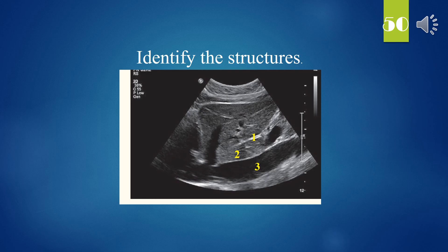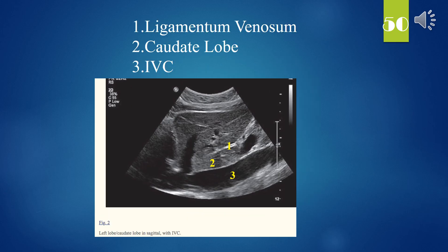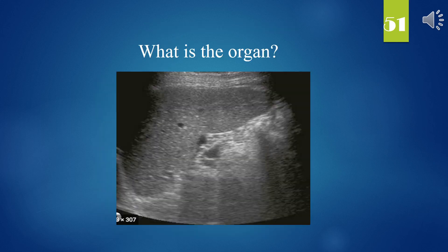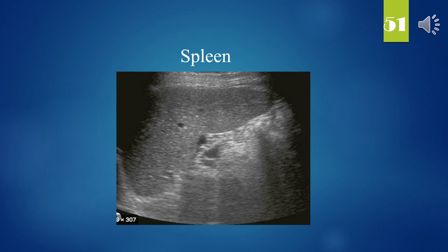Identify the structures. 1. Ligamentum venosum. 2. Caudate lobe. 3. IVC. What is the organ? It's a spleen, not a liver.